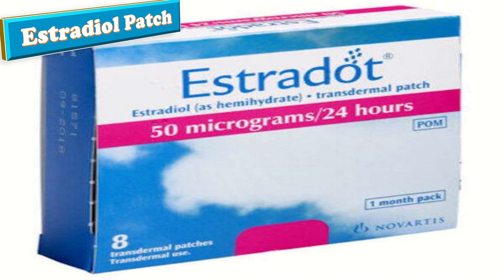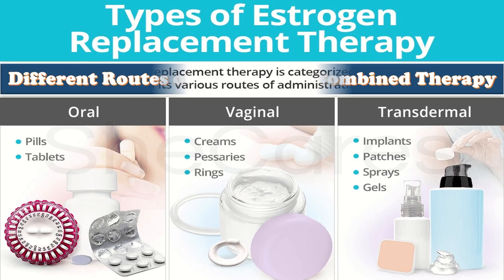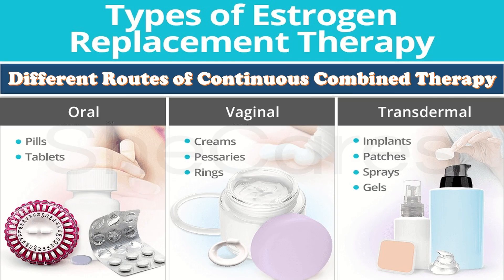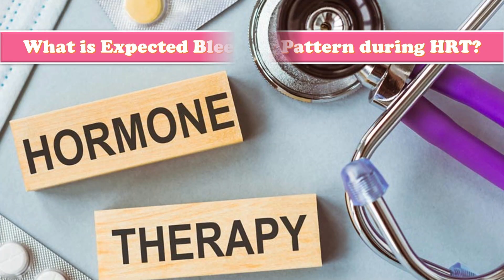The different routes of continuous combined therapy include the oral route in the form of pills and tablets, the vaginal route in the form of creams, pessaries, and rings, and the transdermal route including implants, patches, sprays, and gels.